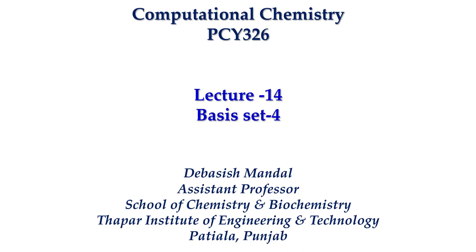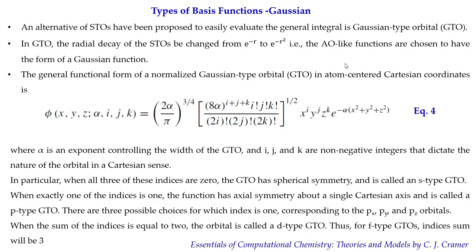We always have to compromise between accuracy and time in these calculations. We proceed to the next type: Gaussian type functions, which are an alternative to STOs. The only difference is that STOs depend on e to the power minus r, but Gaussian type functions depend on e to the power minus r squared.